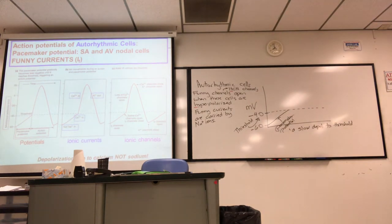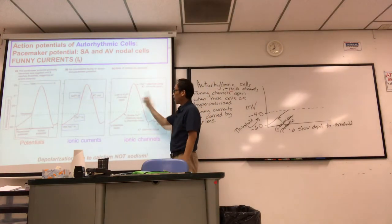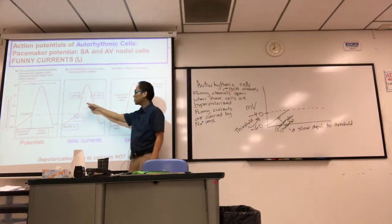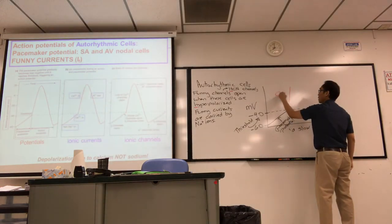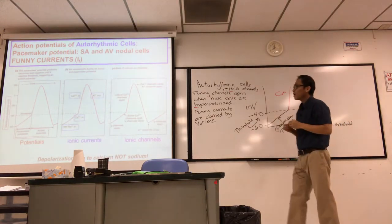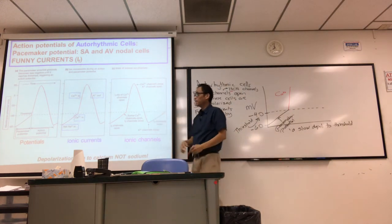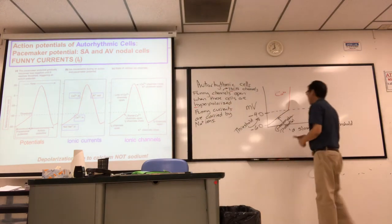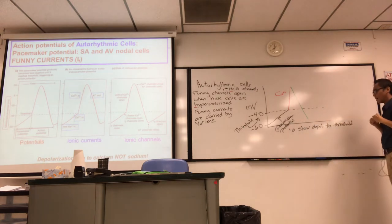So that's what you've got. Once the cell reaches threshold because of this pacemaker potential, you get an action potential. And lots of calcium channels open, so the depolarization is caused by calcium. And then when they close, you get a repolarization due to potassium. So then you repolarize back to negative 60. And when you're hyperpolarized, guess what opens? The funny channels open again.